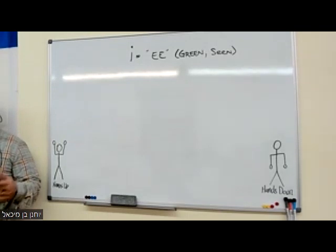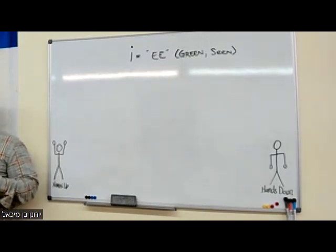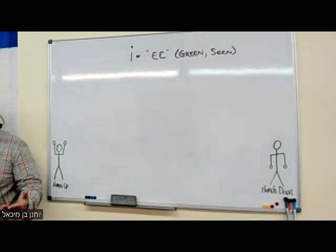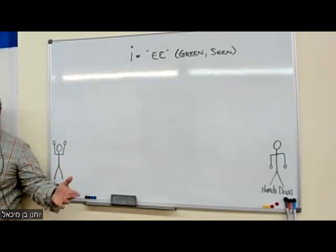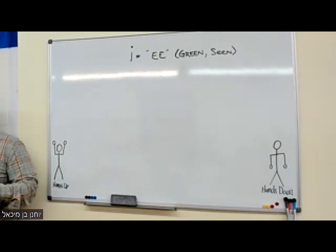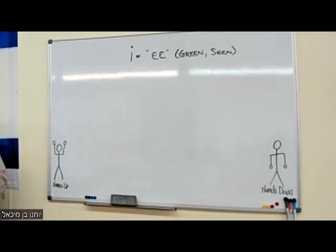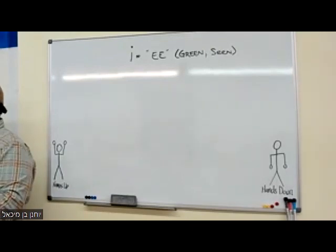We talked before about how Hebrew vowel sounds and Spanish vowel sounds are the same. In English we say 'a,' but in Spanish they say 'ah.' In English we say 'e,' but in Spanish you say 'eh.' In English we say 'i,' but in Spanish you say 'ee.' The o stays the same in both, and for u, English says 'you' while Spanish says 'ooh.'